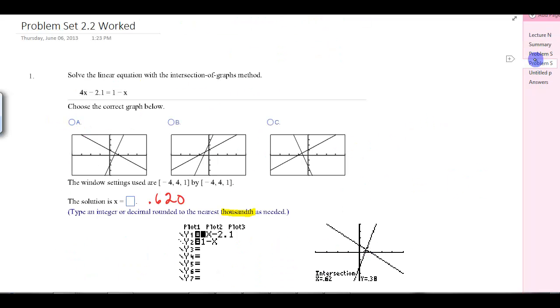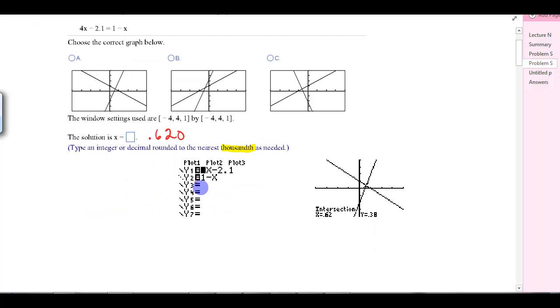Let's look at our problems. Solve this with the intersection of graphs. We'll put this in y1 and this in y2. You can see a screenshot of me doing it on the calculator. Y1 was 4x minus 2.1 and 1 minus x. I graphed it and got this picture. Which one is our choice? Our intersection's over here on the right. Do second calc 5 and hit enter three times. We got x equals 0.62. It says round to the thousandth, so that's how we would do number one.